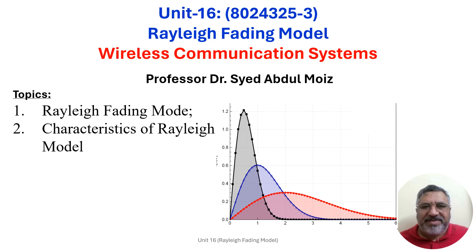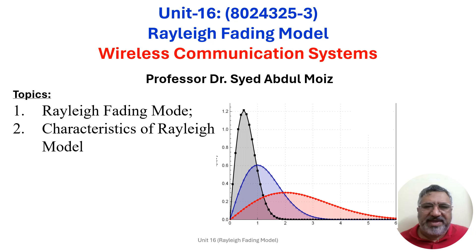The Rayleigh fading model serves as a fundamental framework for understanding the statistical behaviour of wireless communication channels in scenarios due to the dominant line of sight path. By characterising the probability distribution of the received signal strength, we gain insight into the randomness and variability encountered in a multipath distribution environment. In this unit, we firstly discuss the Rayleigh fading model and then some of its characteristics.